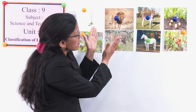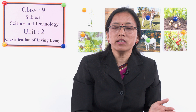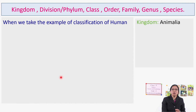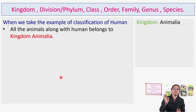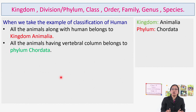Let us now look at the hierarchical order of classification for human beings once again. Kingdom is Animalia — all animals including human beings belong to kingdom Animalia. Phylum Chordata — all vertebrates with a vertebral column belong to Phylum Chordata. Class Mammalia — organisms which possess mammary glands belong to Mammalia. Order Primates — monkeys, gorillas, gibbons, lemurs, and humans belong to order Primates.